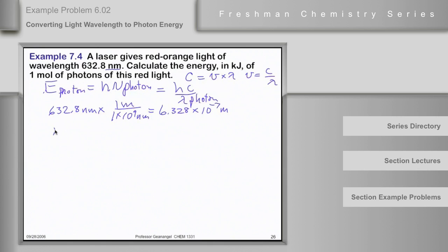So E of the photon is equal to Planck's constant, 6.63 times 10 to the minus 34th joule seconds, times c, which is 3.00 times 10 to the 8th meters per second.